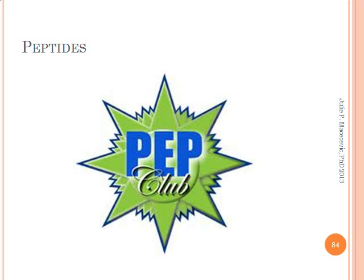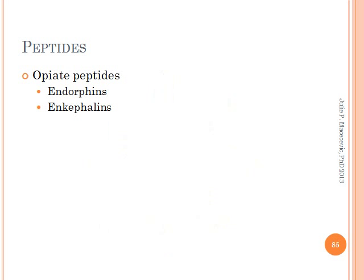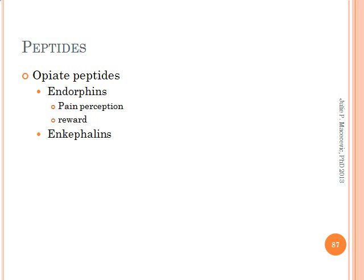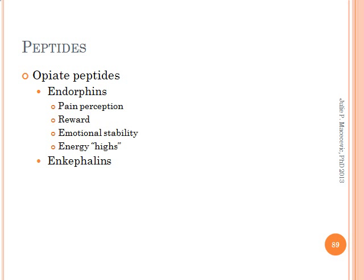Last on my list of important neurotransmitters are the peptides, which are small proteins or chains of amino acid molecules attached in a particular order. One important group of peptides is the opiate-type peptides — the endorphins and enkephalins. Endorphins may be involved in a wide variety of emotional states, pain perception, reward, emotional stability, and energy. Opiates such as morphine, codeine, and heroin activate opiate receptors.